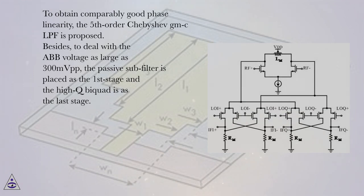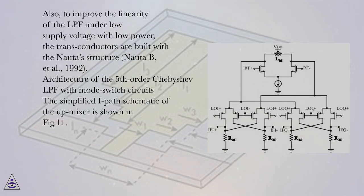Besides, to deal with the ABB voltage as large as 300 mVpp, the passive sub-filter is placed as the first stage and the high-Q bi-quad is as the last stage. Also, to improve the linearity of the LPF under low supply voltage with low power, the trans-conductors are built with a NADA structure.